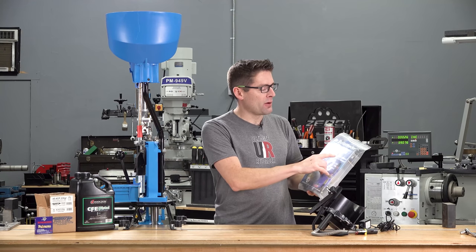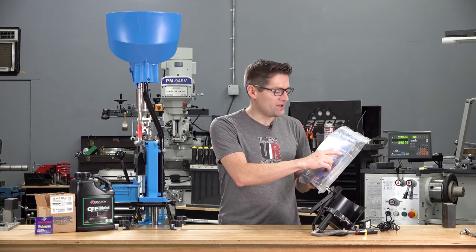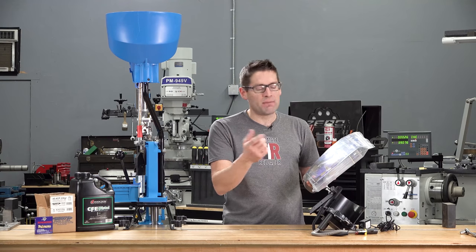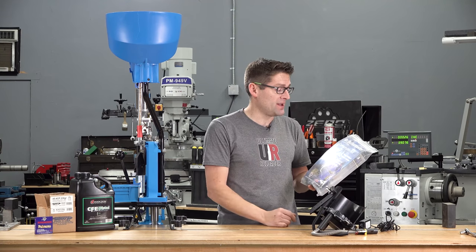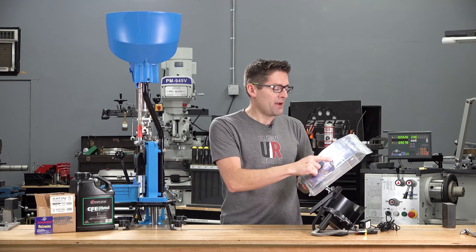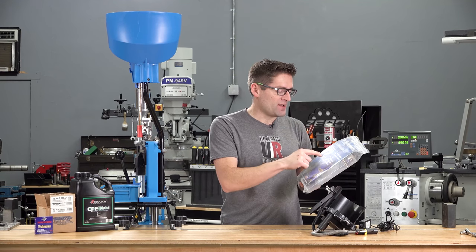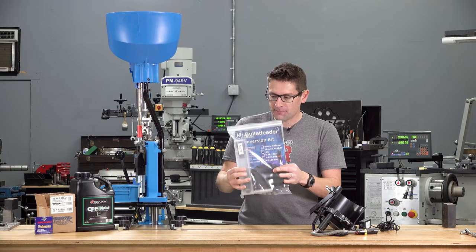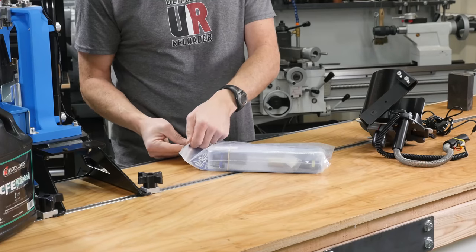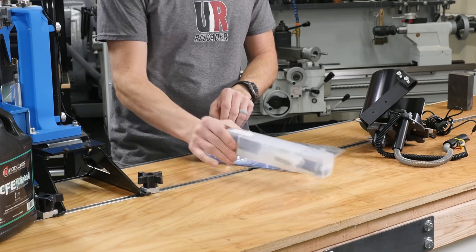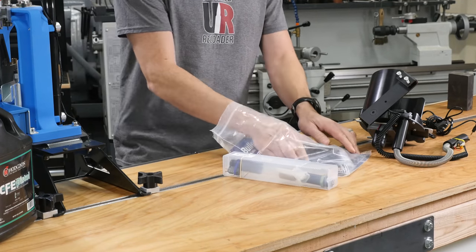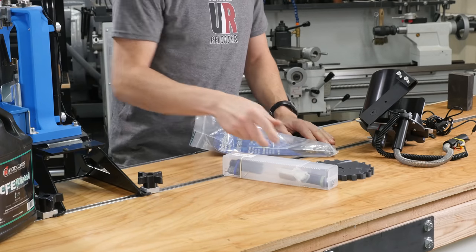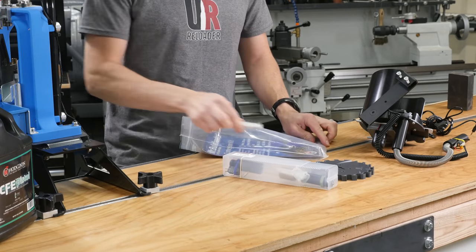The kits are available for 9mm and 38 Super, 10 and 40 which are the same bullet diameter, 45 which is the one that I have, 556 and 223, 762 slash 308, and 65 by 55. So what I wanted to do is get this bag open. We'll take a look at what is included in the kit and then I'm going to go through the process of performing that changeover.